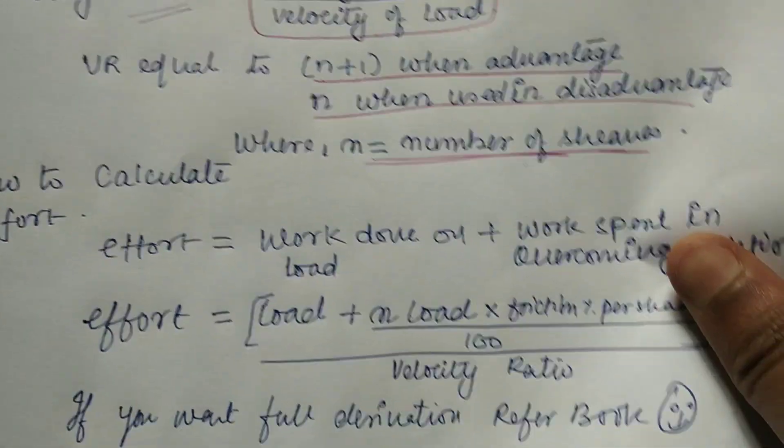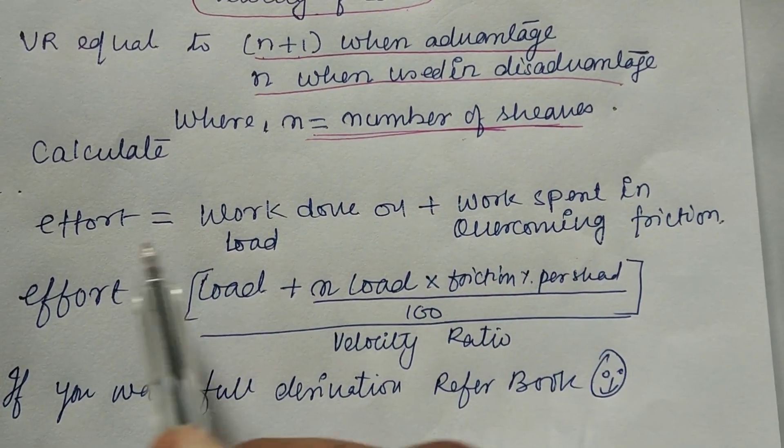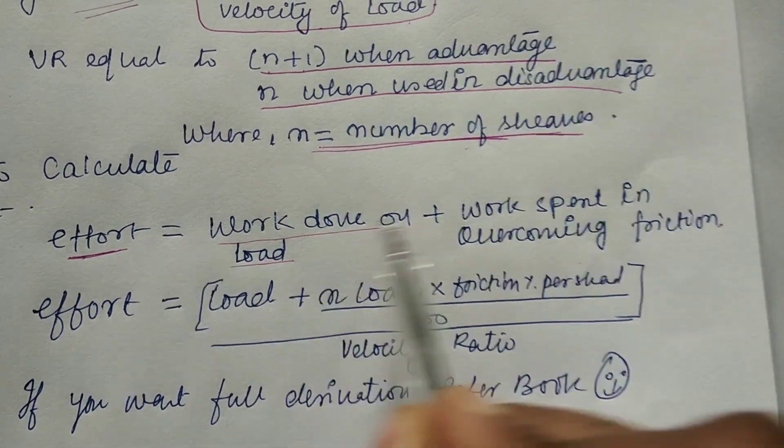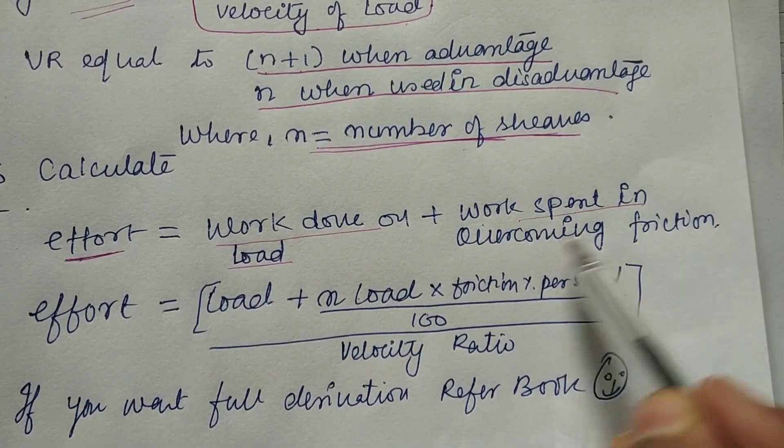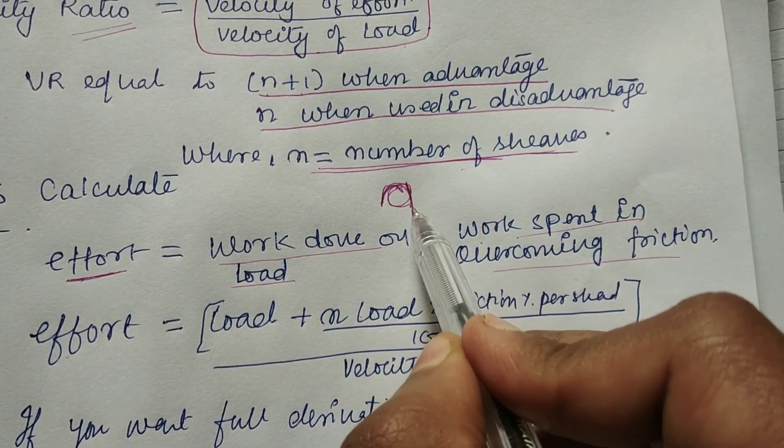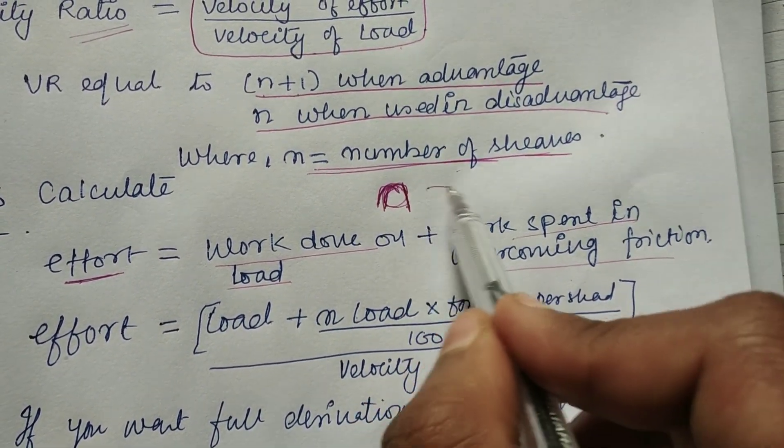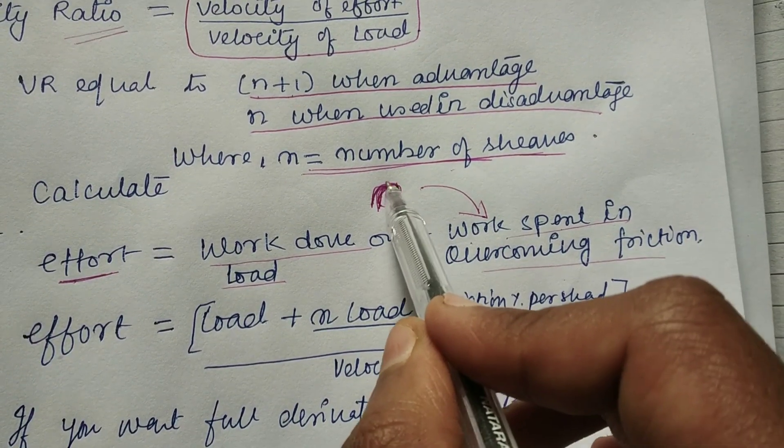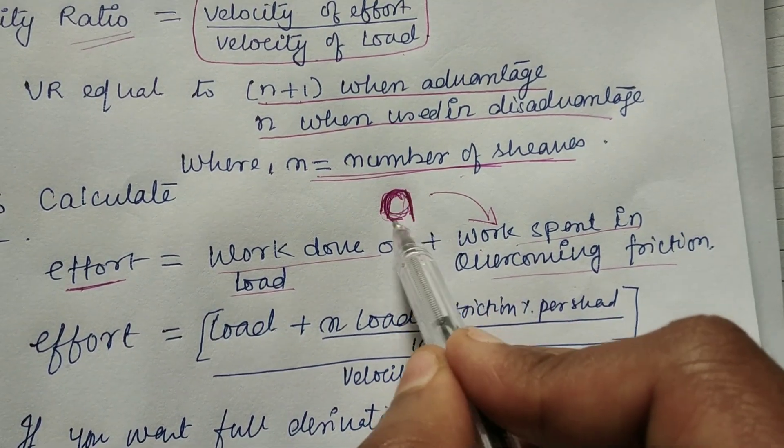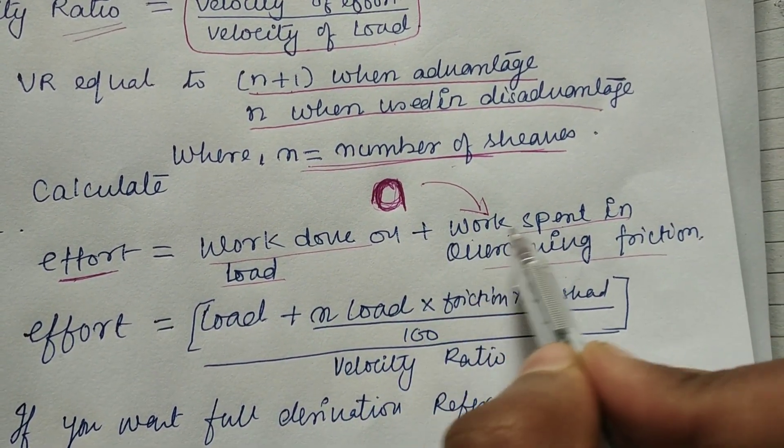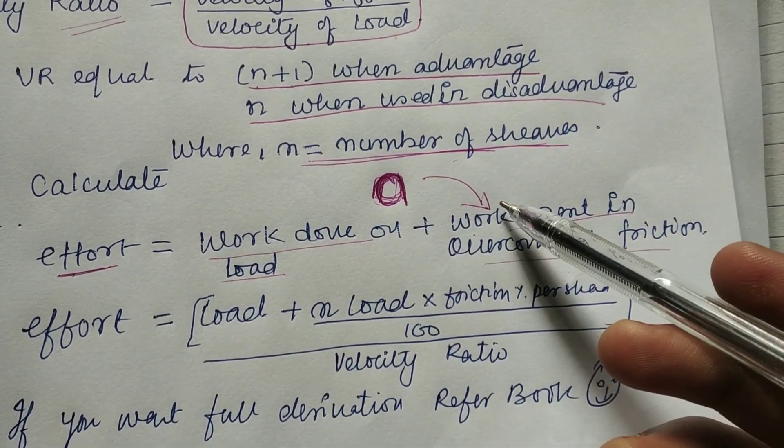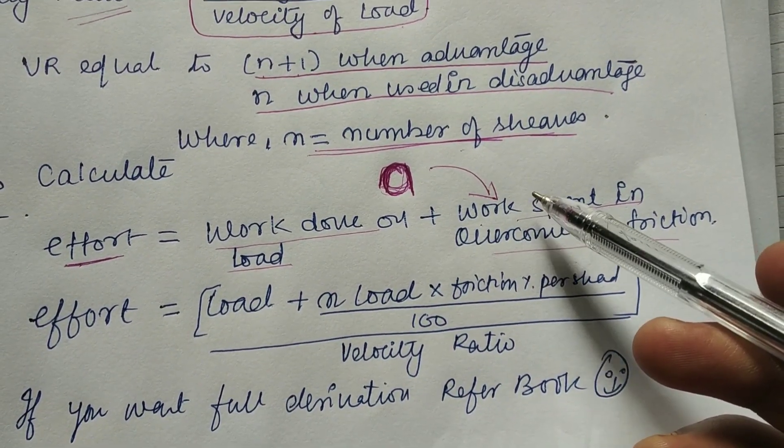How to calculate the effort – this is very important. Effort equals work done on load plus work spent in overcoming the friction. If it's frictionless, then work spent on overcoming friction is zero. But if it has friction, we need to do some work to overcome it. If you want to see the whole derivation, refer to a book.